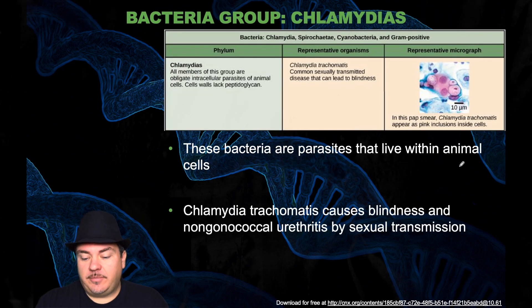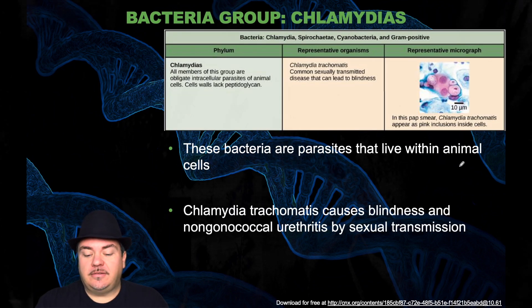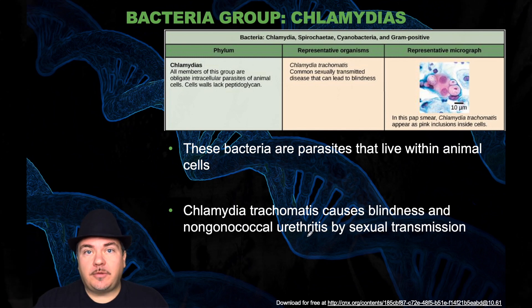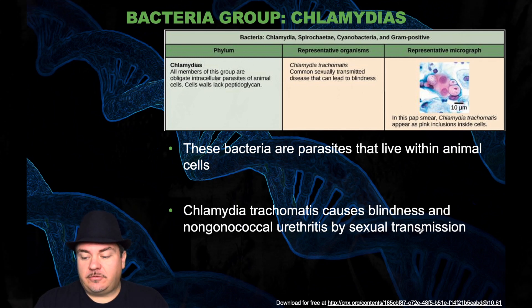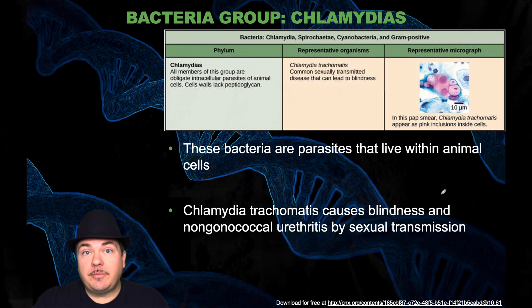The next phylum is the chlamydias. These bacteria are parasites that live within animal cells. Chlamydia causes blindness and uterine infections by sexual transmission — you may have heard of chlamydia as a sexually transmitted disease.